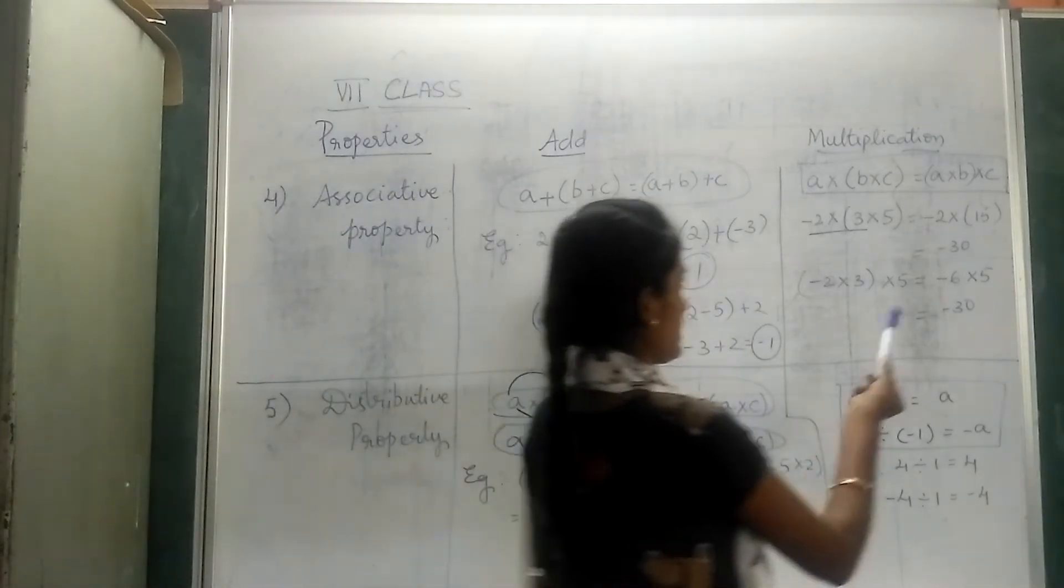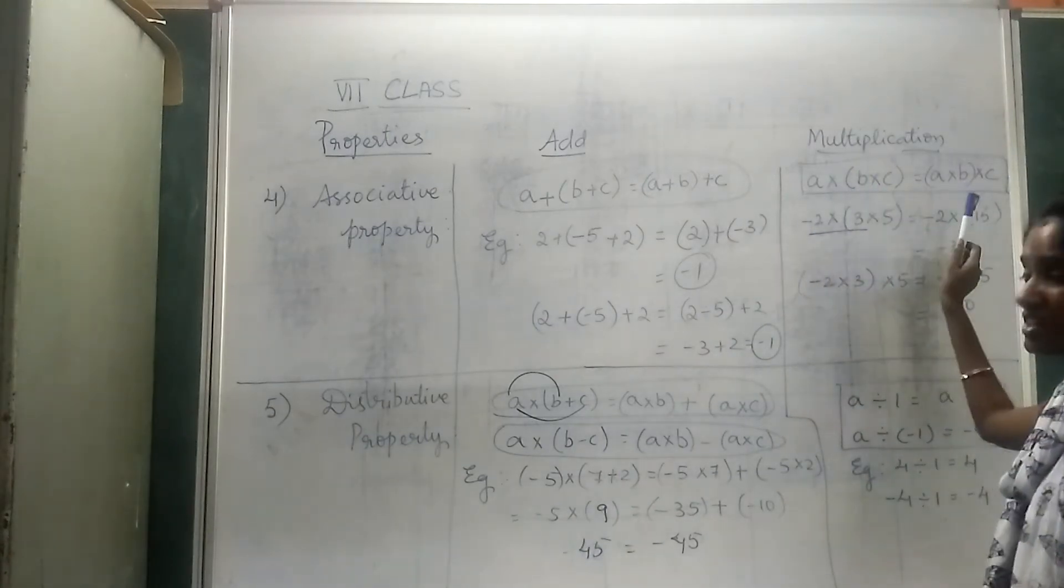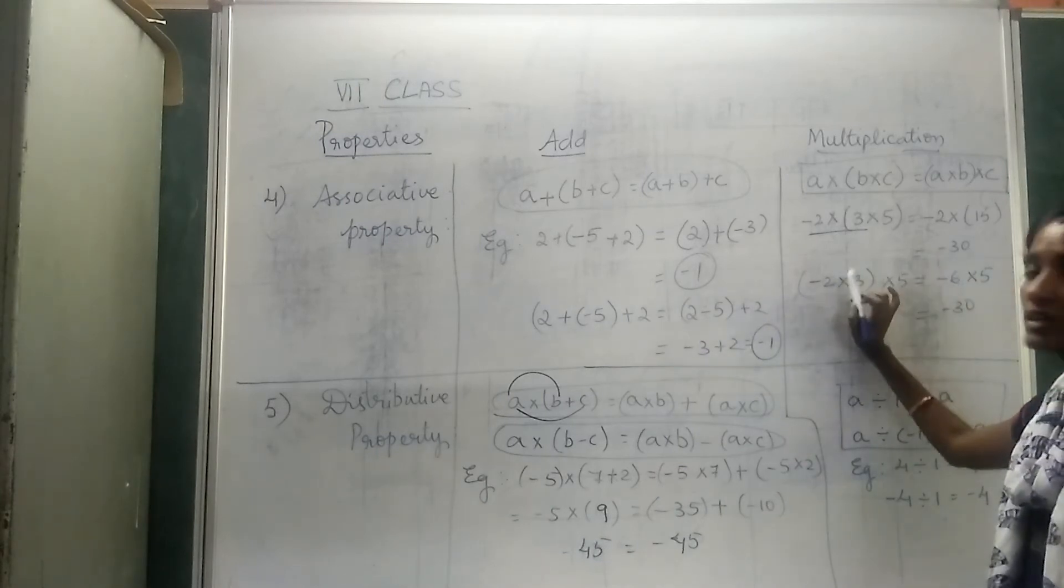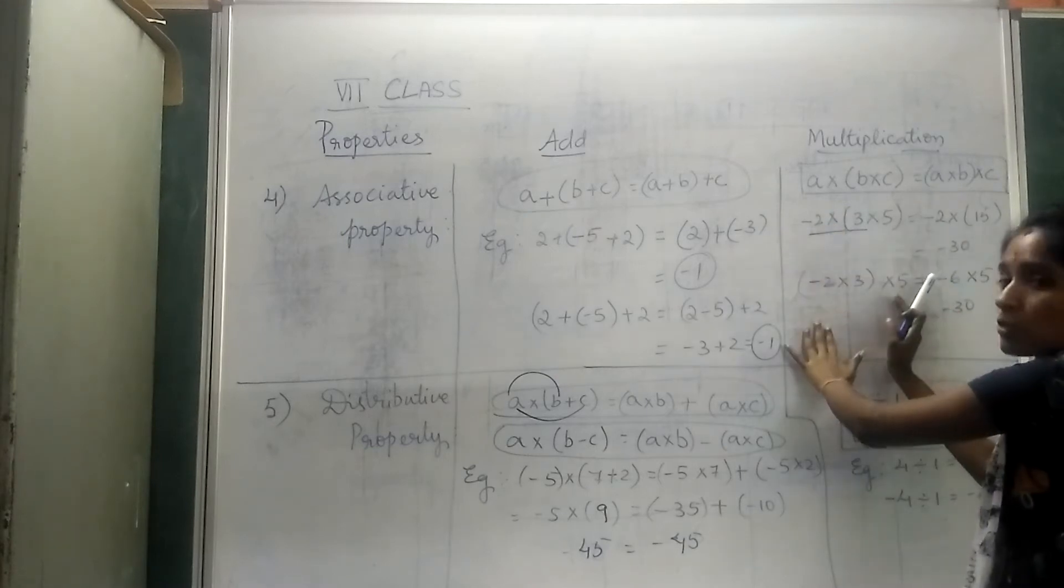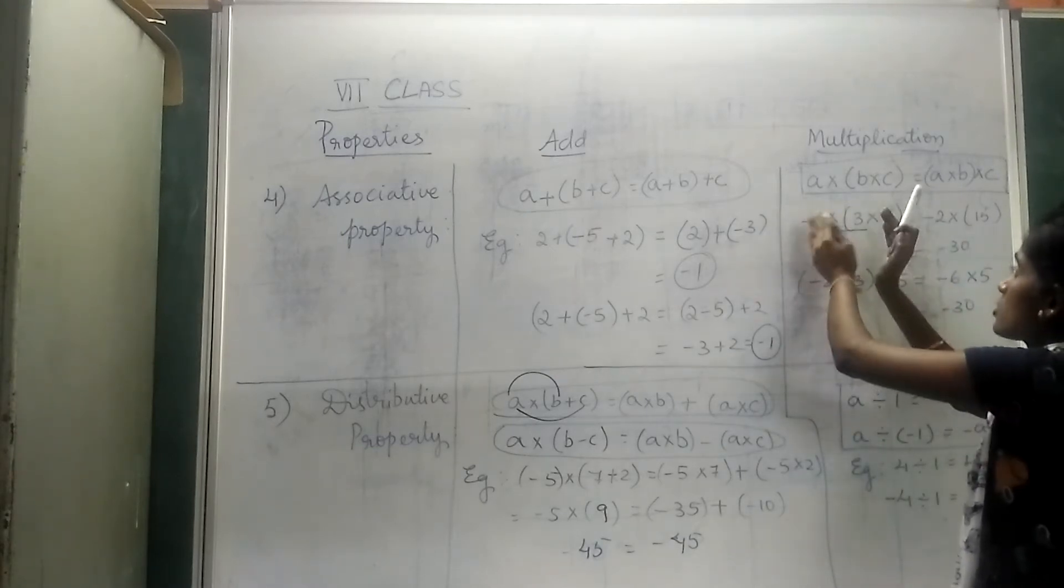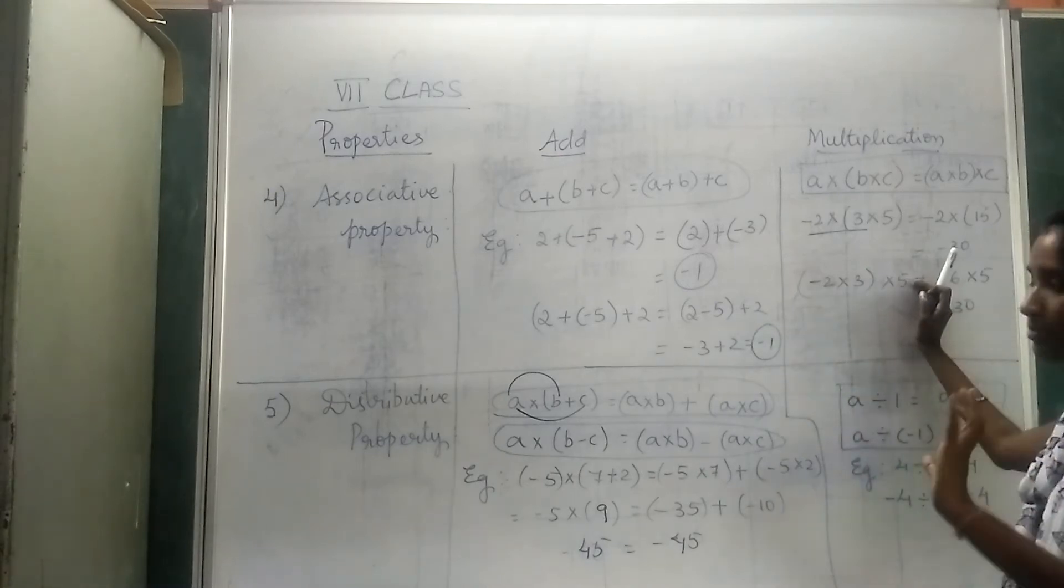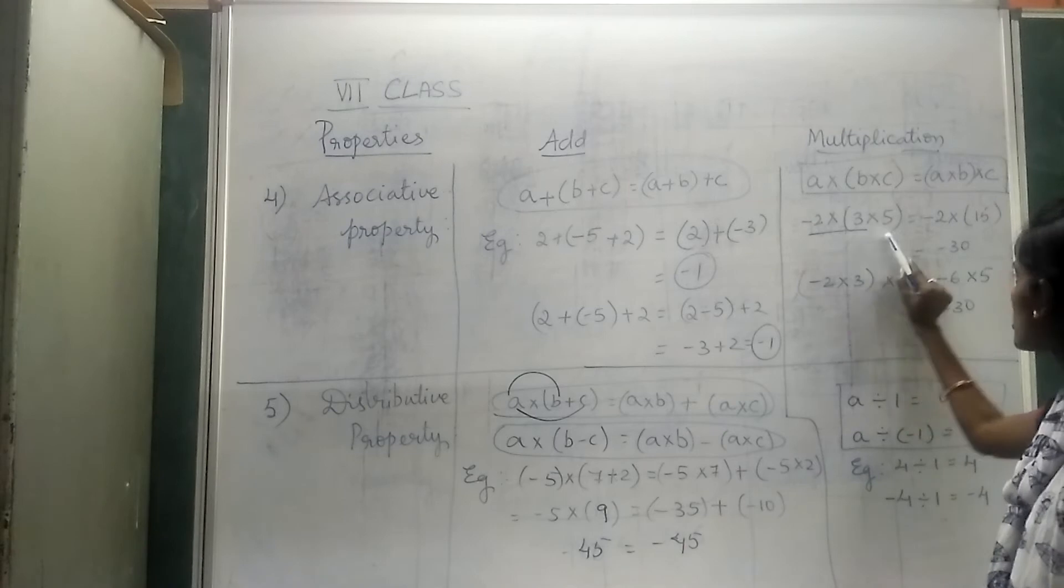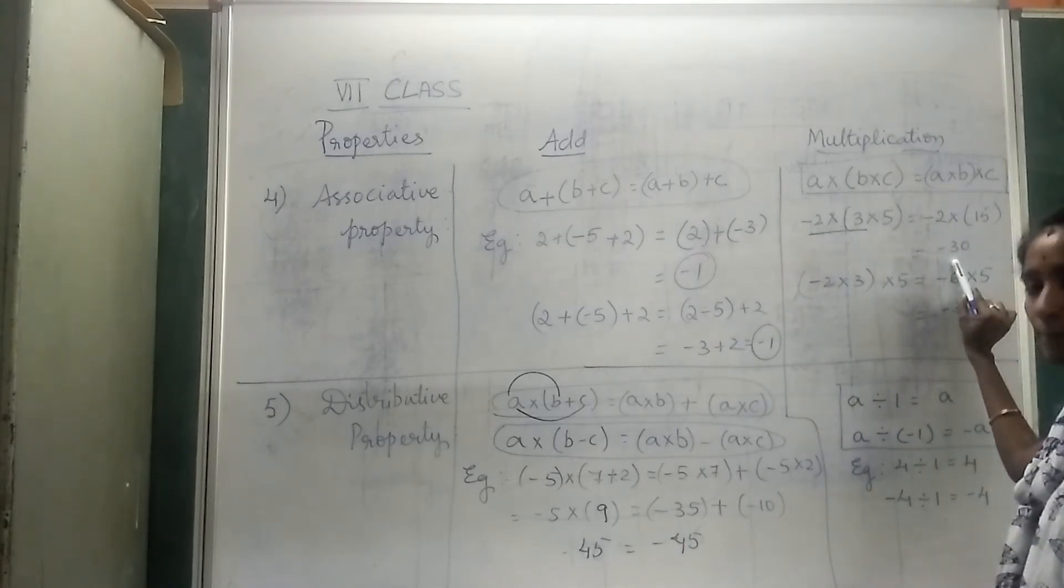Now, coming to multiplication. What is the same part? a × b × c. Only in the bracket where it is true. When you see here, -2 × (3 × 5). But when you go to the other part, I have just separated this as one bracket and the same number different. First we will multiply which is in the bracket. 3 × 5 = 15. -2 × 15 = -30.